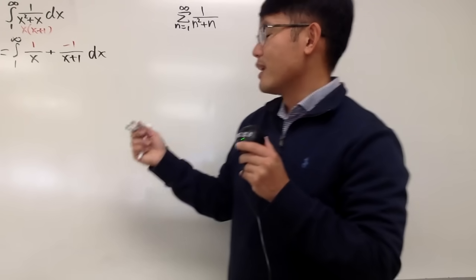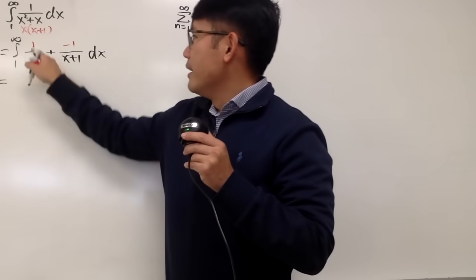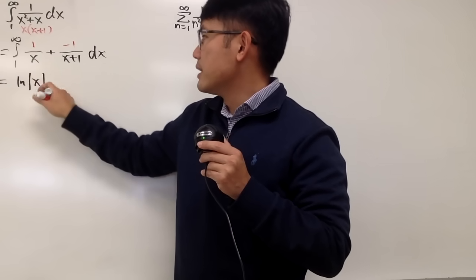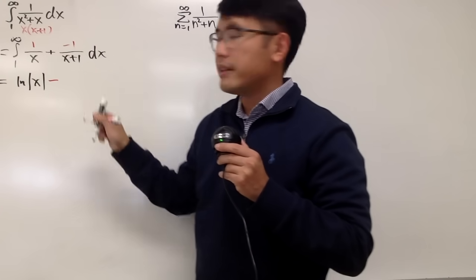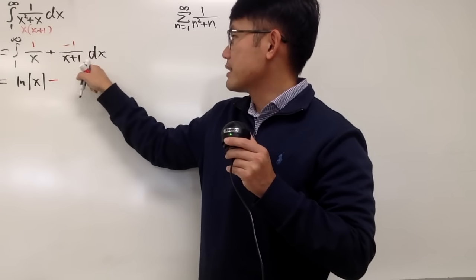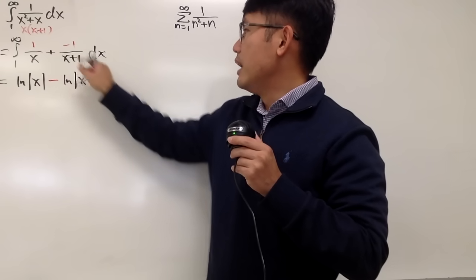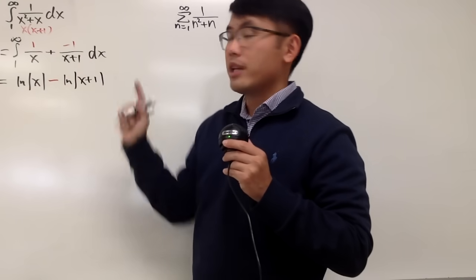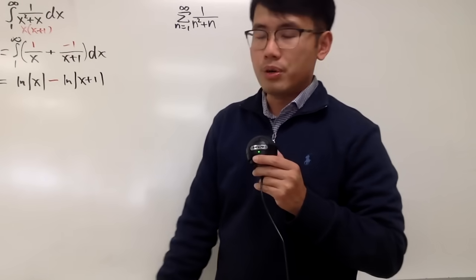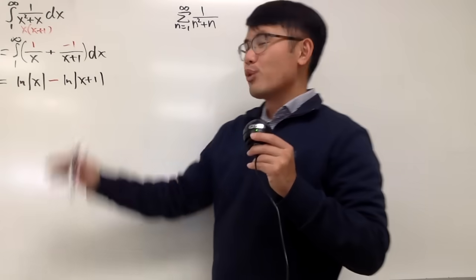Now this is so nice because we can just integrate. The integral of 1 over x gives us natural log absolute value of x. And then this is the minus, so let's put that down. Integrating 1 over x plus 1 is just natural log absolute value of x plus 1, and we have the negative right here already. Some people will say you should put parentheses there, so I'll put it down. Anyway, that's the integral part.